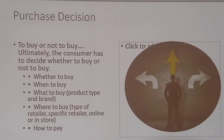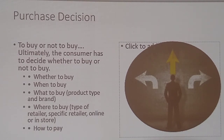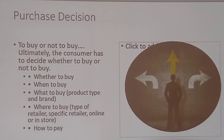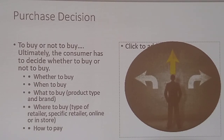Purchase decision: to buy or not to buy. Ultimately the consumer has to decide whether to buy or not to buy — whether to buy, when to buy, what to buy (product type or brand), where to buy it (type of retailer, specific retailer, online or in store). And then how to pay: some people may want to pay by credit card, some want to use PayPal, some want to pay cash, and some people don't want to pay at all.